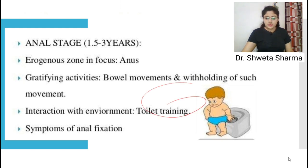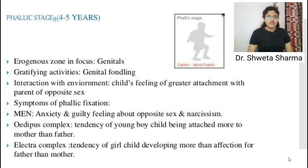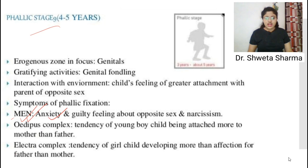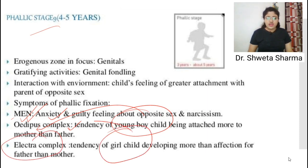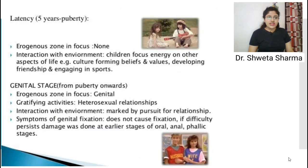In the oral stage, the child explores everything through the oral cavity. In the anal stage, toilet training occurs. In the phallic stage, two important terminologies arise: the Oedipus complex, where a male child is more attached to his mother compared to his father, and the Electra complex, where a female child is more affectionate toward her father compared to her mother. The genital stage is the time of sexual reawakening.